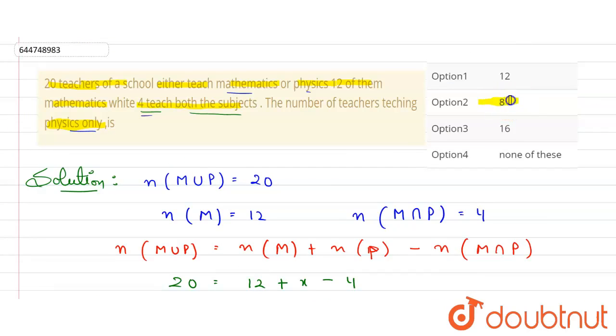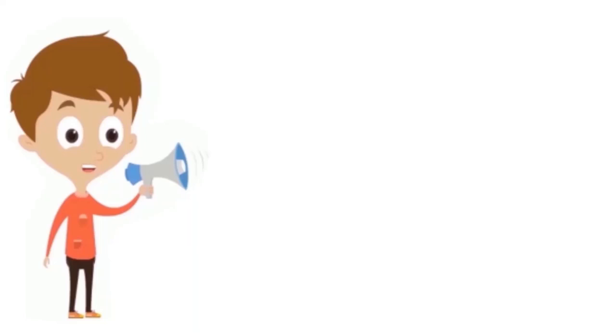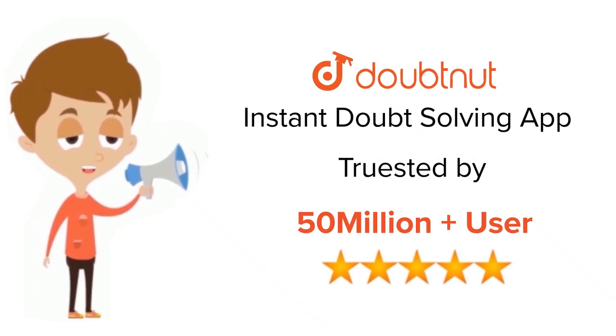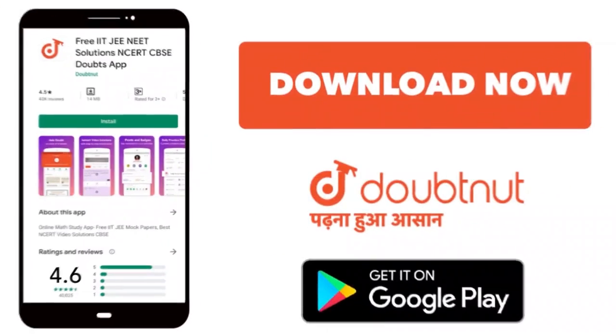So answer is 8, option 2. So this is our final answer. Thank you. For class 6 to 12, IIT-JEE and NEET level, trusted by more than 5 crore students, download Doubtnut app today.